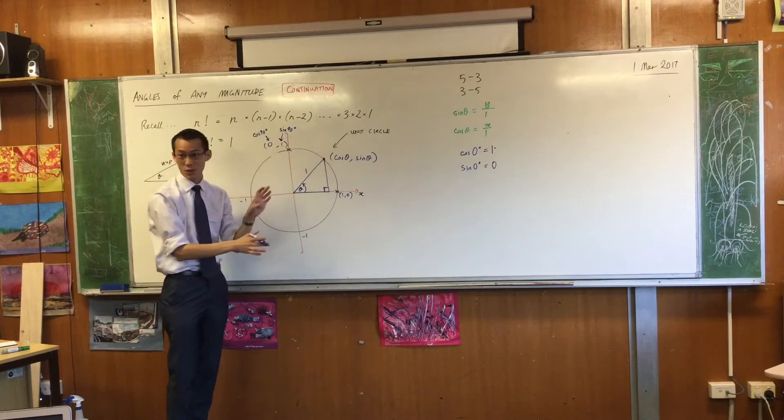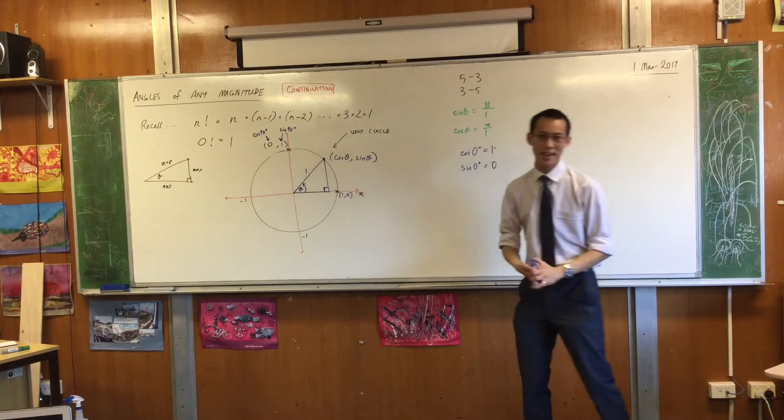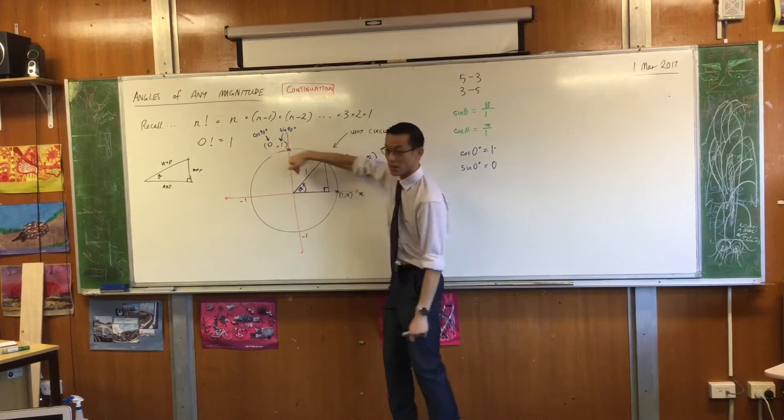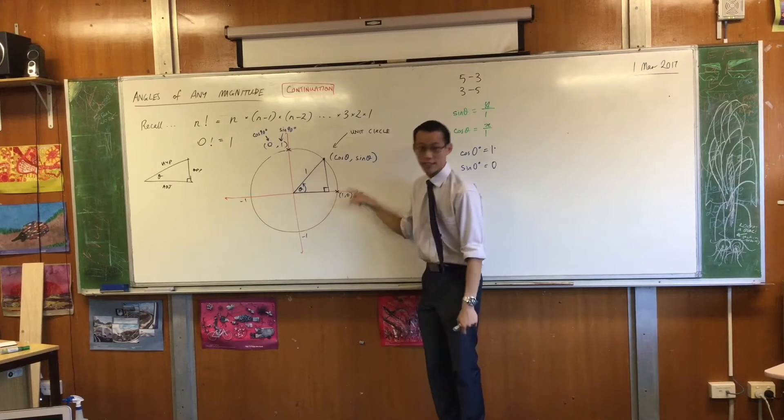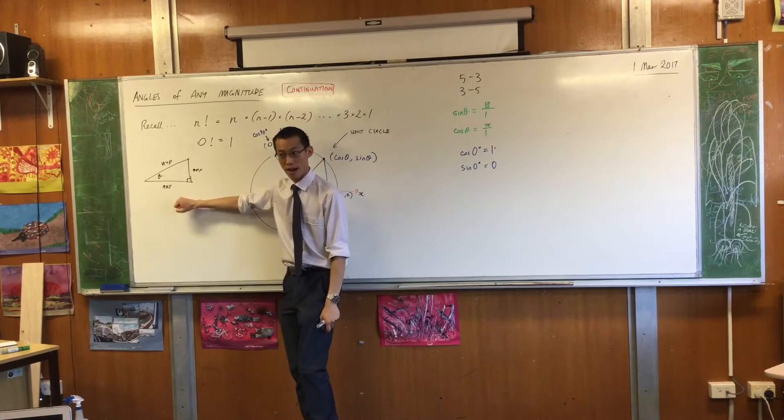We've stayed inside the first quadrant, but the real superpower of using the unit circle is that I can go straight out of there. I can go not just from 0 up to 90, but I can do obtuse angles over here, and I can go to reflex angles as well, even though none of them can fit inside my right-angled triangles.